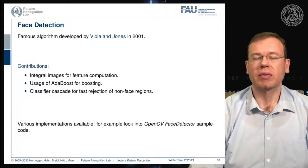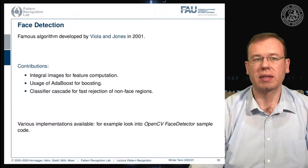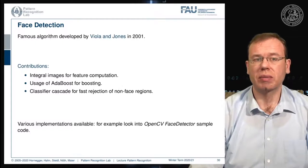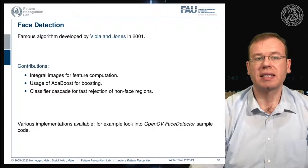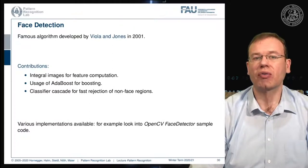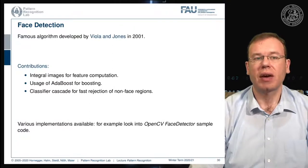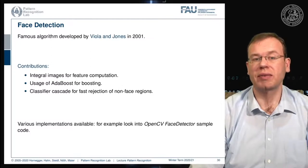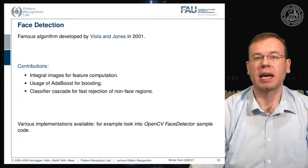The Viola-Jones algorithm is really famous because it solved the face detection problem. It uses integral images for feature computation, AdaBoost for classification, and builds a classifier cascade for the fast rejection of non-face regions. Various implementations are available — for example, in OpenCV the face detector sample is actually implementing AdaBoost.